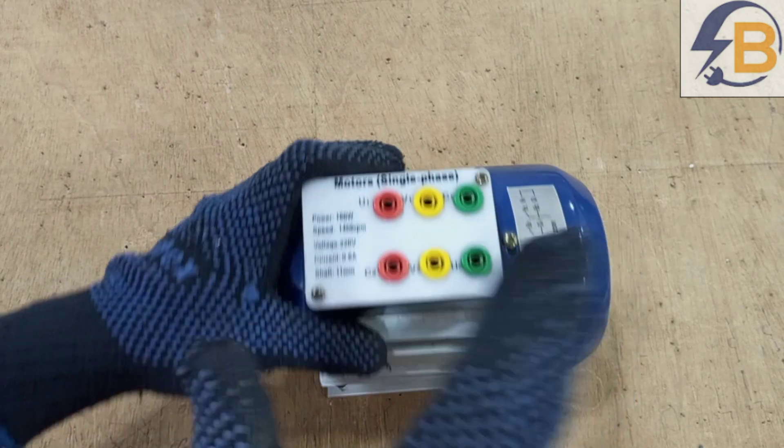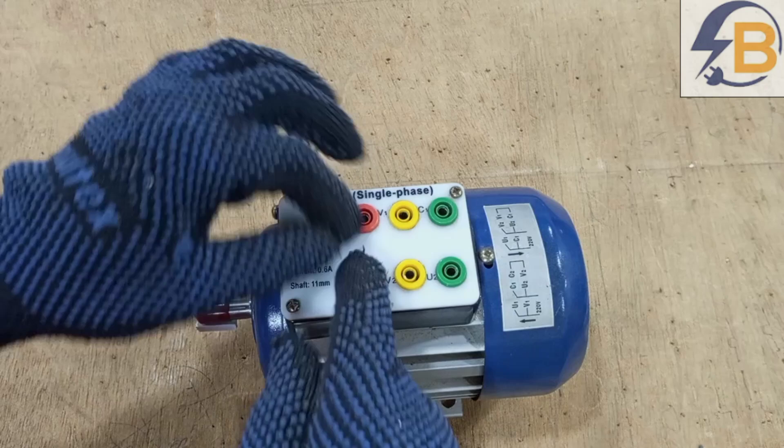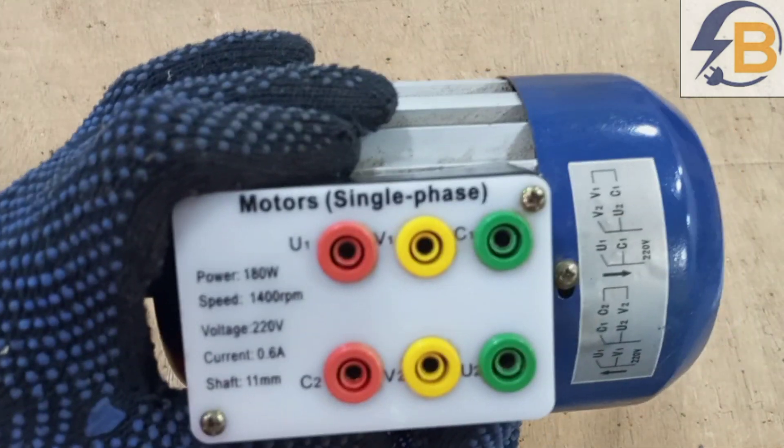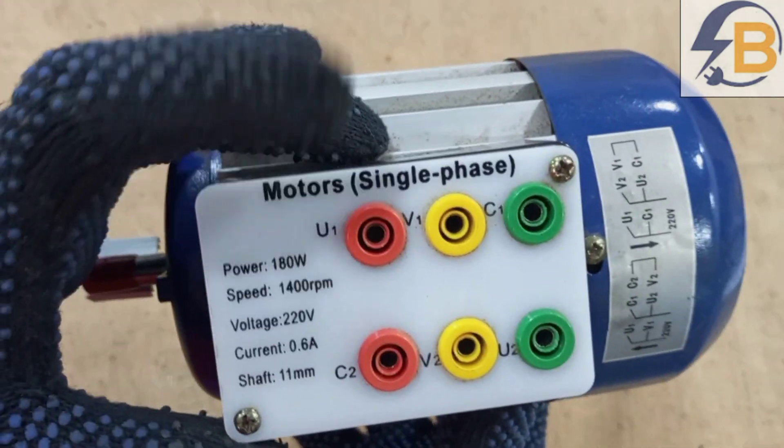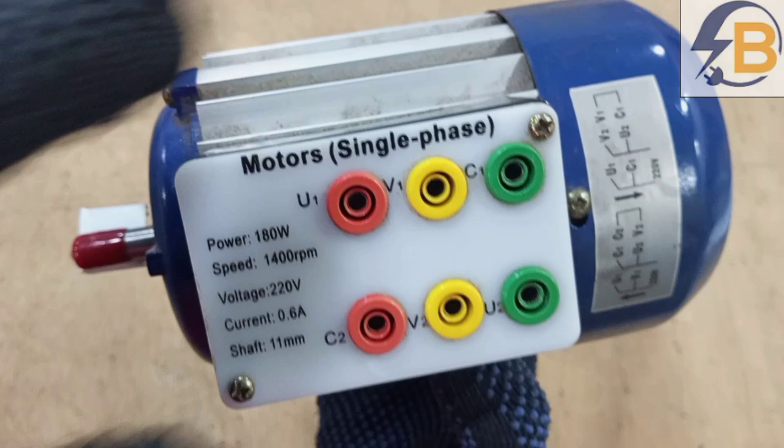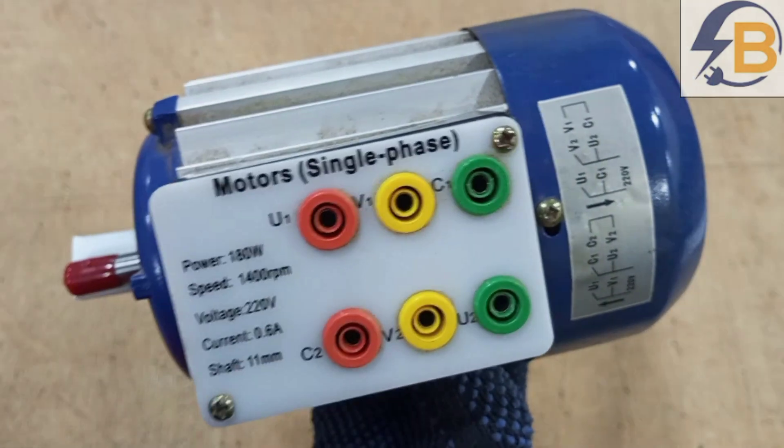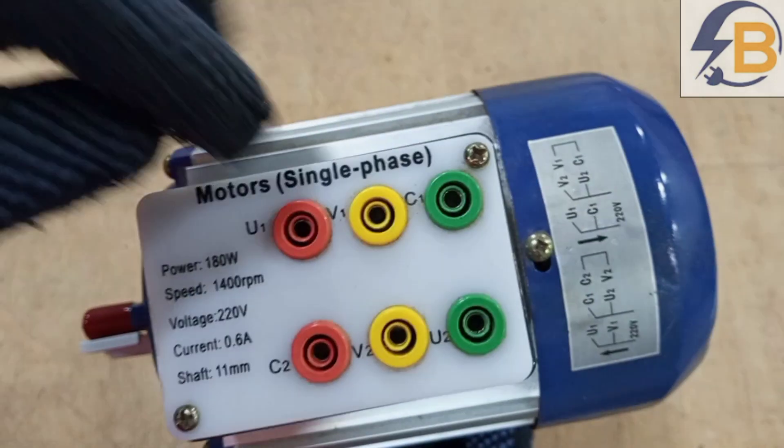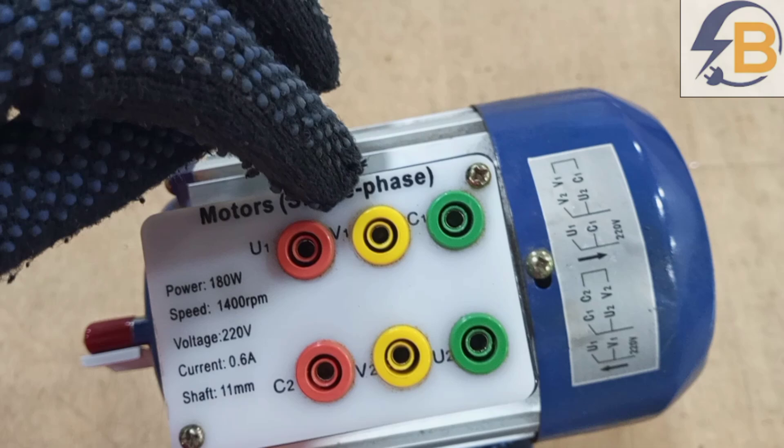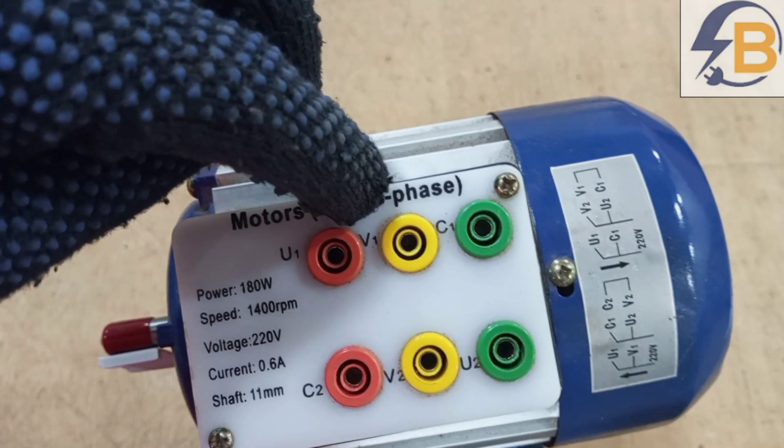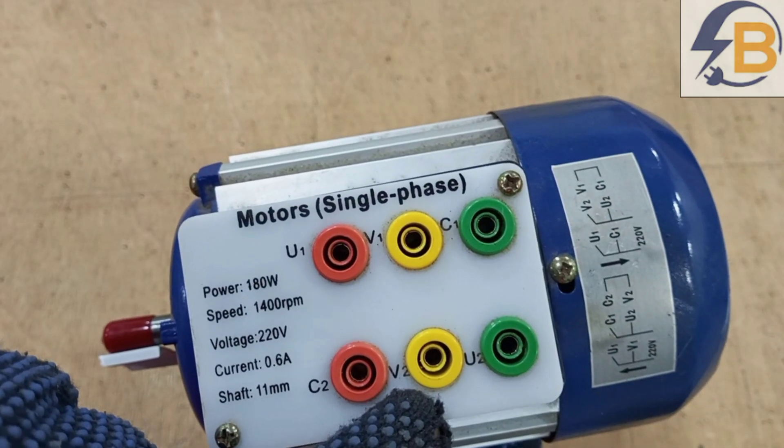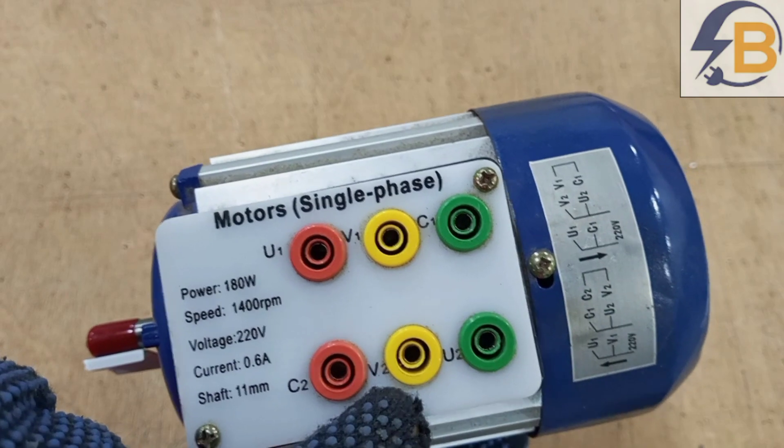So in this single phase motor, there is a capacitor, and then there are two windings. The two windings are labeled U and V. So as you can see, we have U1 here, and then we have U2 here. Then we also have an auxiliary winding.